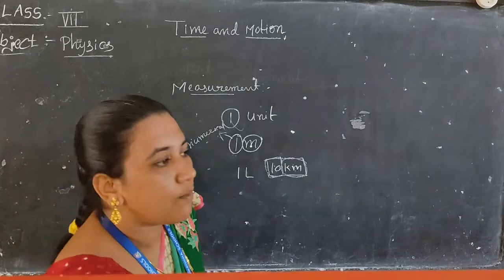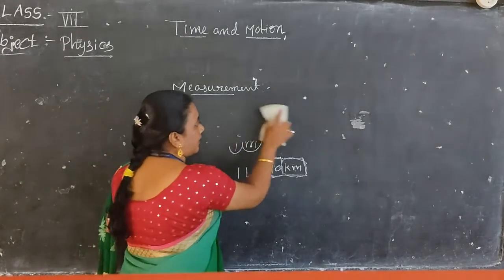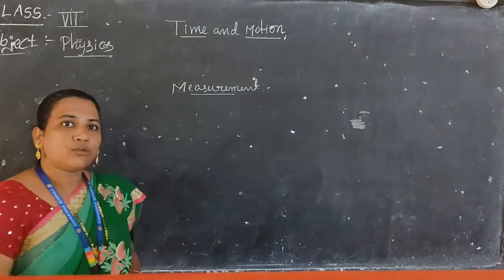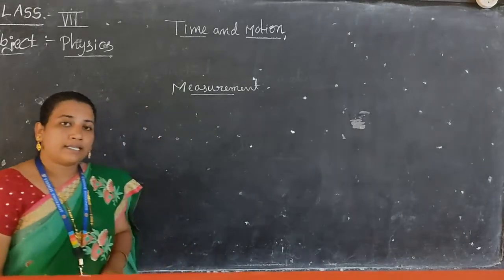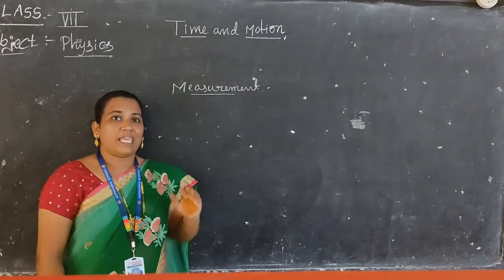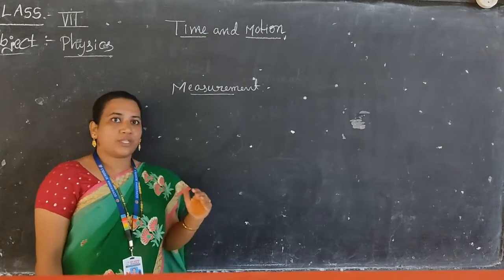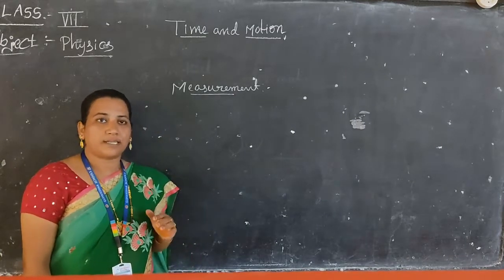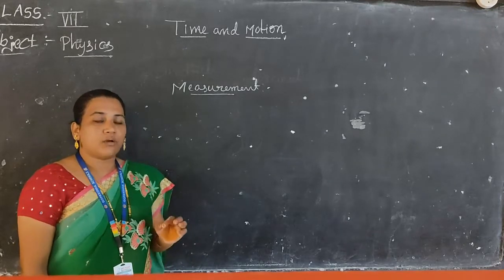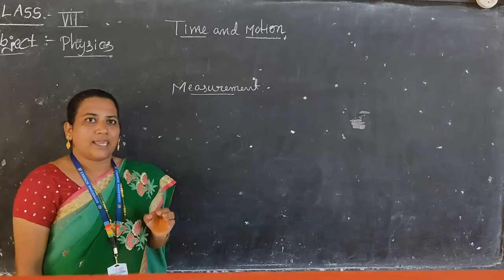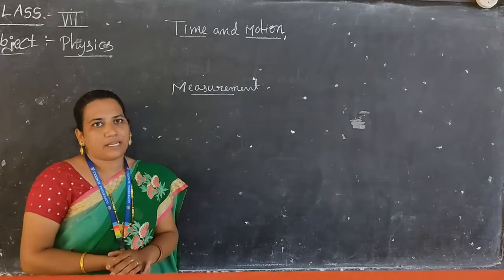These physical quantities are of two types: standard quantities and non-standard quantities. Coming to the standard quantities — standard quantities will give very accurate measurements. Those values will not change from person to person or from place to place. The value will be fixed. So we can get very exact, accurate values by using standard measurements.